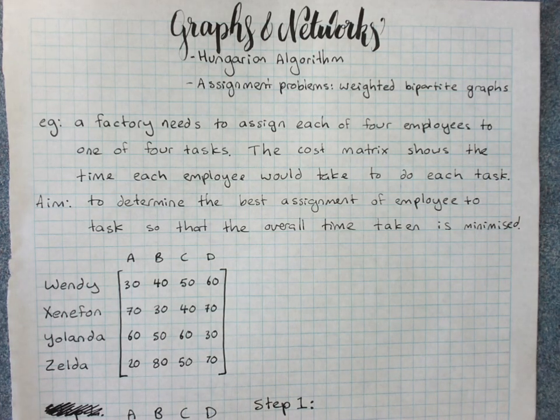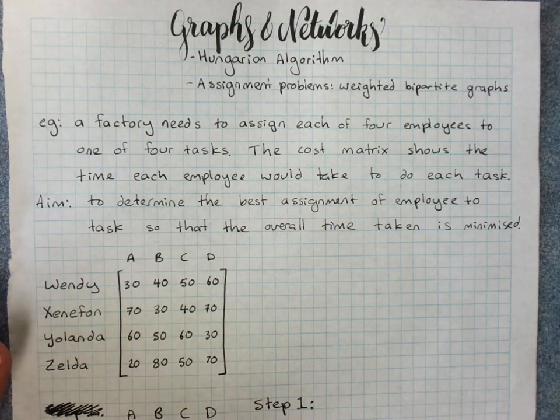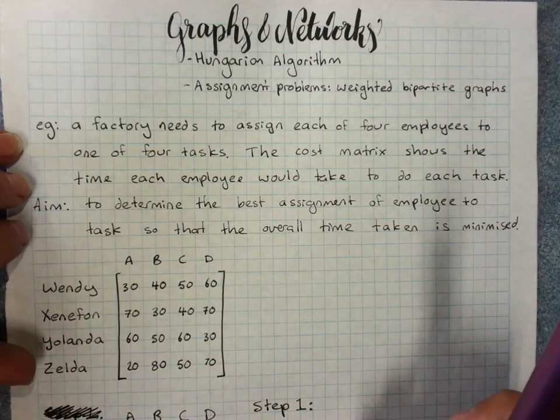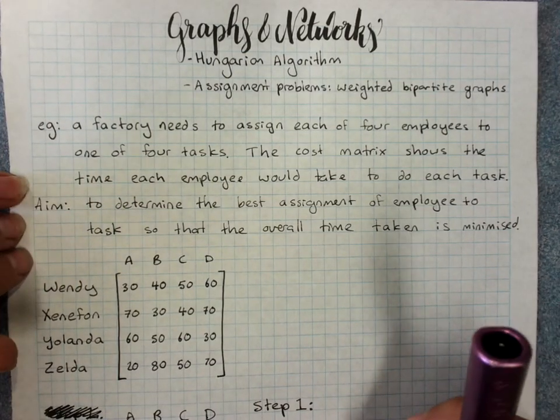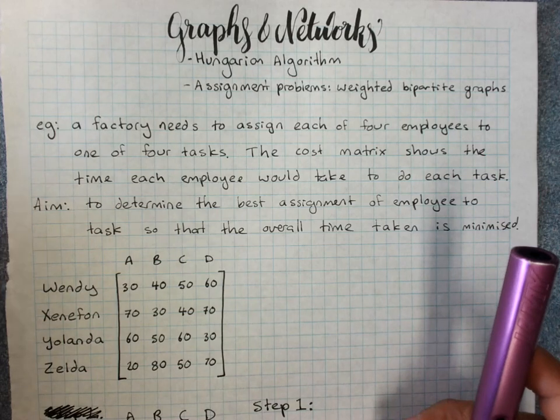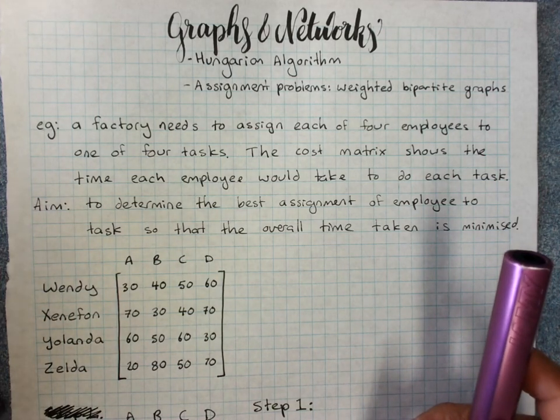Graphs and networks, the Hungarian algorithm for assignment problems with bipartite graphs. Okay, this one's a little tricky. I'm just going to go through the method. I'll make another video where I explain roughly why it works, but you don't need to know that. You do need to be able to use the method.